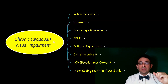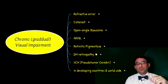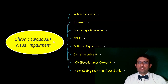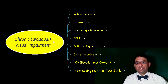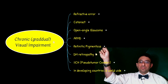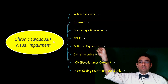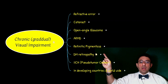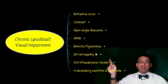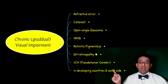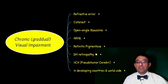In this episode we discuss the workup and treatment for conditions associated with gradual visual loss. The differential diagnoses for conditions with chronic or gradual visual impairment include: refractive error, cataract, open-angle glaucoma, age-related macular degeneration, retinitis pigmentosa, diabetic retinopathy, idiopathic intracranial hypertension (also known as pseudotumor cerebri), and a couple of conditions that happen in developing countries that we will discuss later.